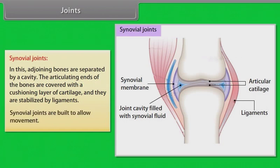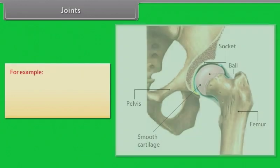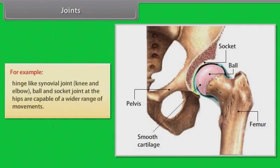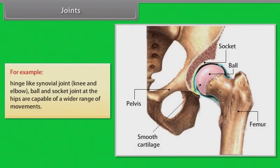Synovial joints are built to allow movement. For example, hinge-like synovial joints such as the knee and elbow, and ball-and-socket joints at the hips, are capable of a wider range of movements.